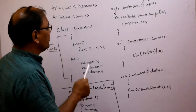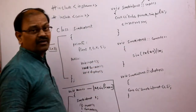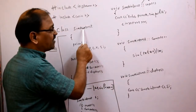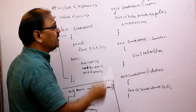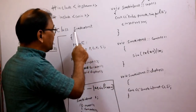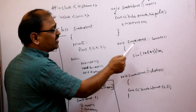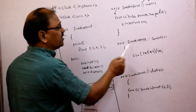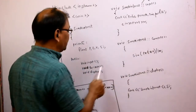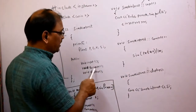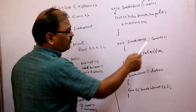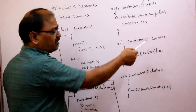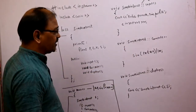Next, we have taken one more member function — that is compute. For the compute member function, we write 'void simple_interest::compute'. Whatever class name we have defined, we have to write the same thing here. Many students will write 'SI' instead of 'simple_interest' — that will cause a problem. The name of the member function must be the same while writing outside the class with the scope resolution operator.